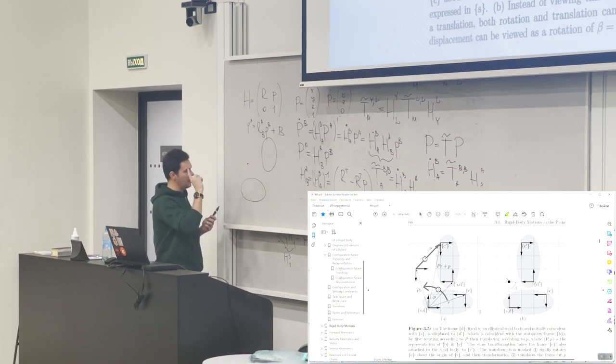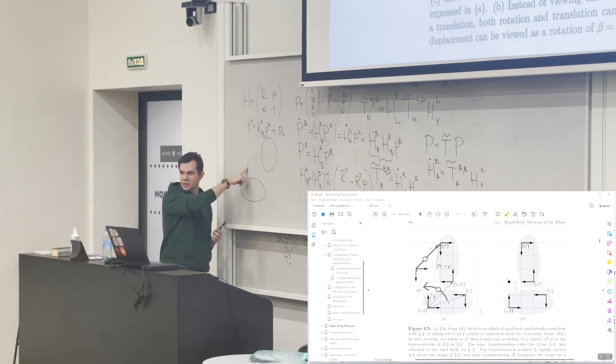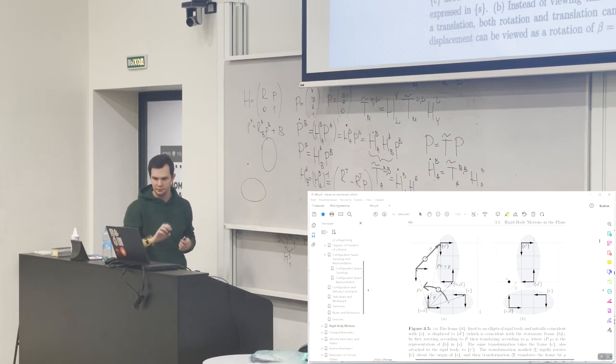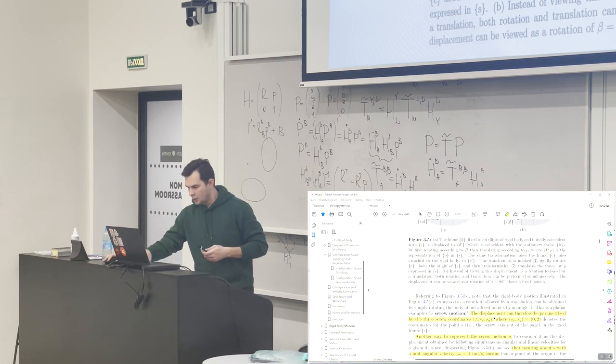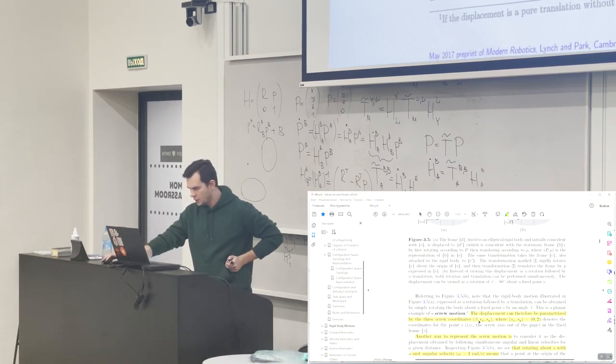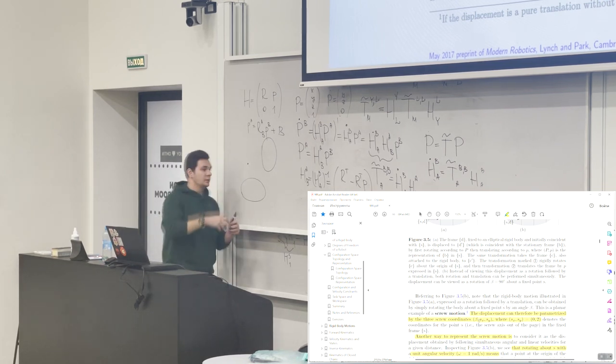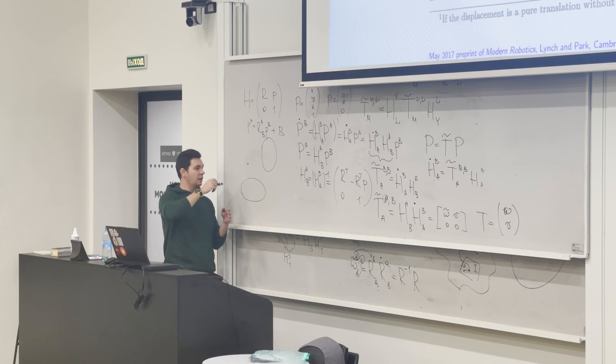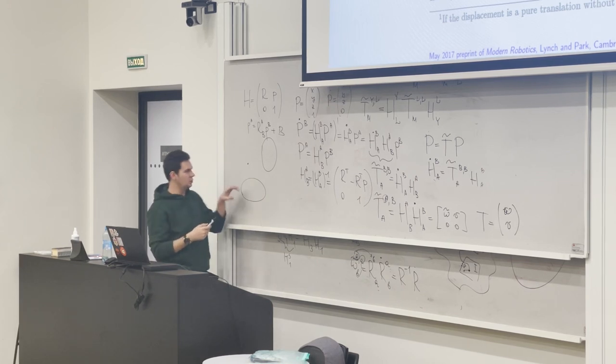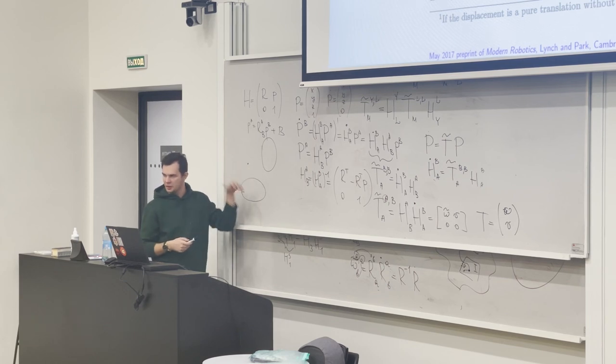So we can describe this motion if we will tell where is the position of this point and what is the velocity. Here this is planar example of screw motion. So it looks like, oh, I have a screwdriver.